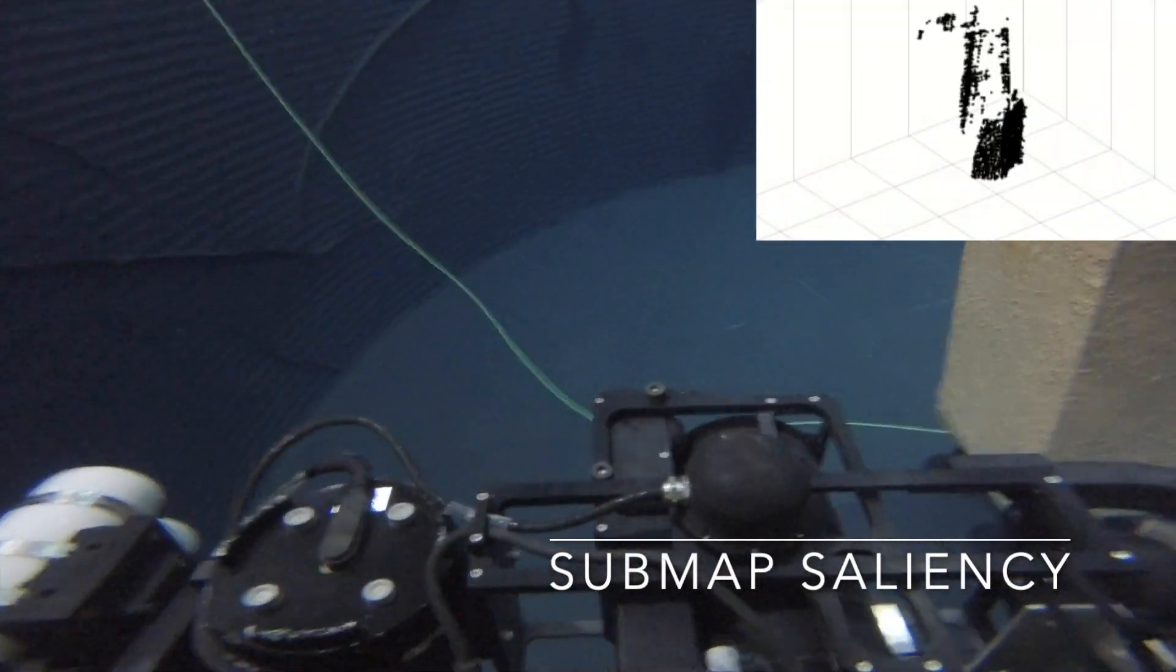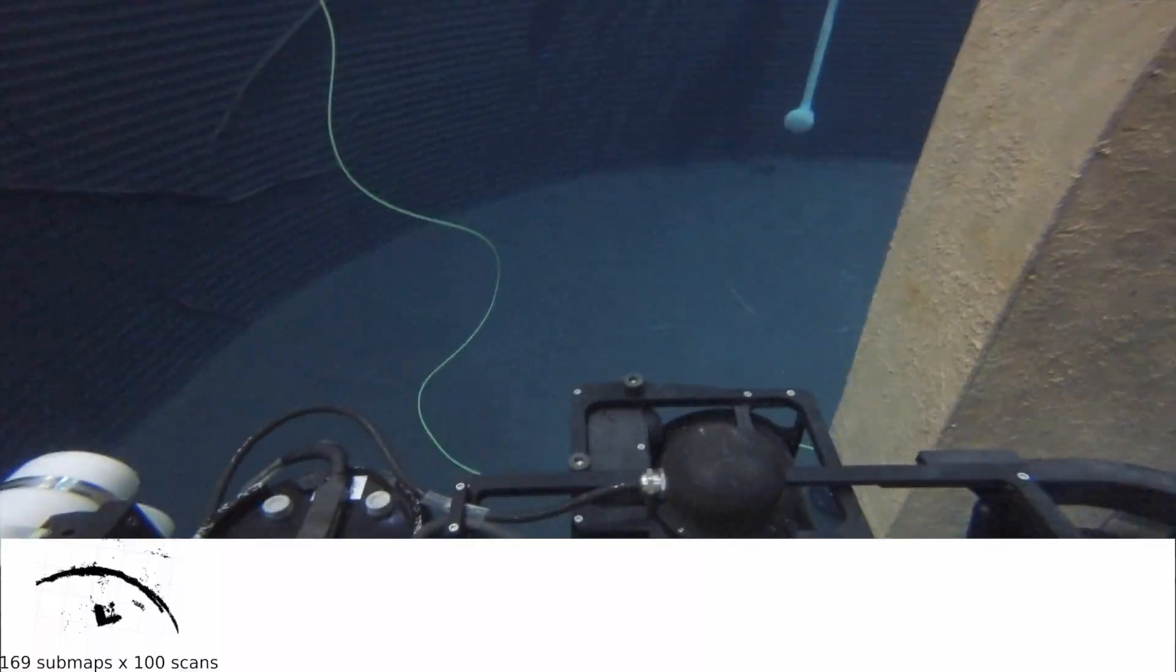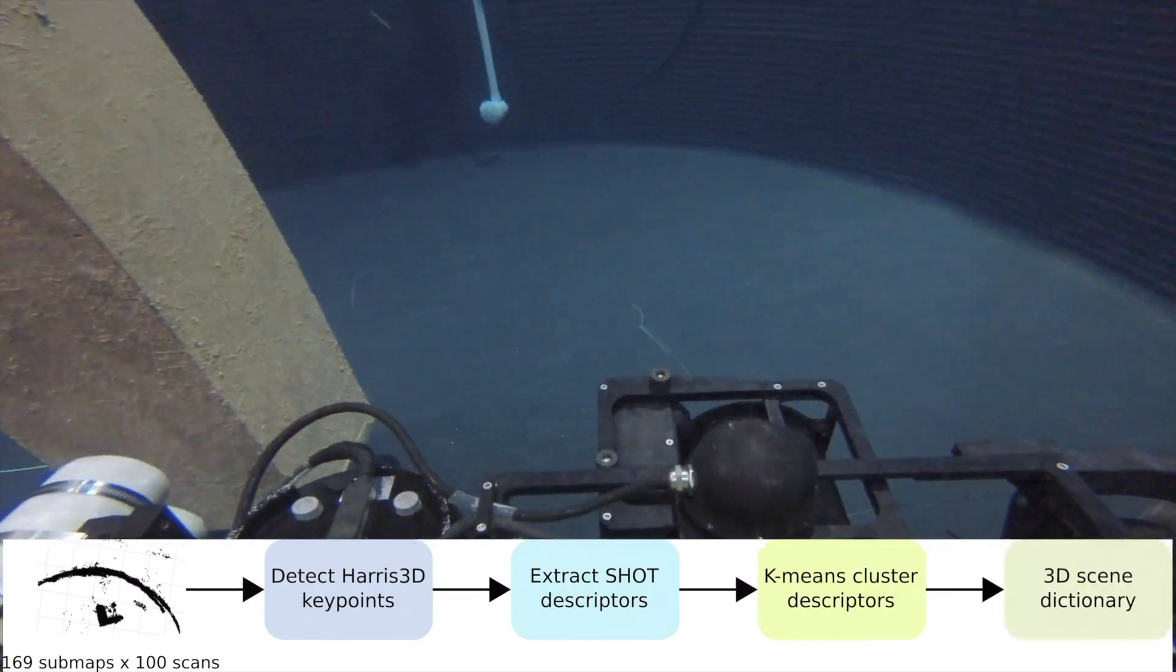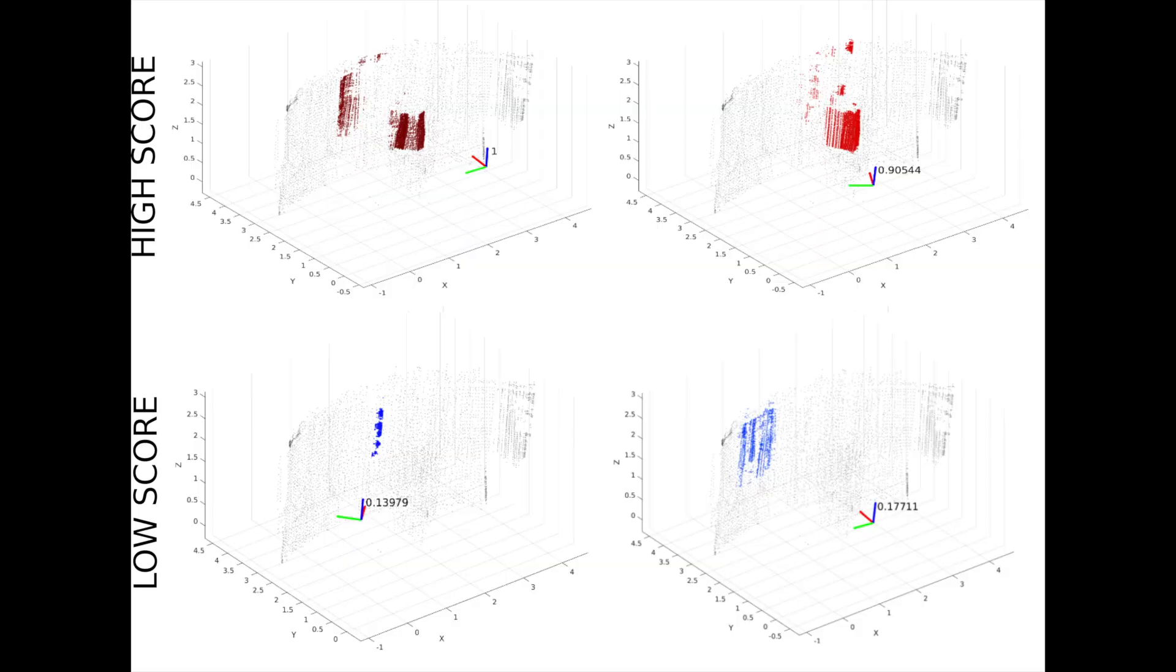We first teleoperate the vehicle underwater to collect sonar submaps. We generate a 3D visual bag of words that encodes point cloud information in the environment. We use the dictionary to get salient submaps, which reflect good locations for scan matching loop closures.